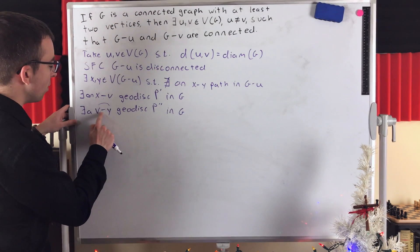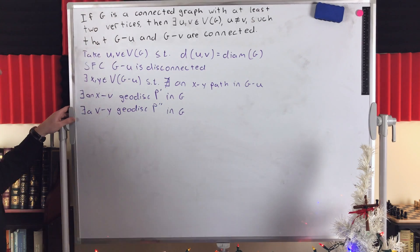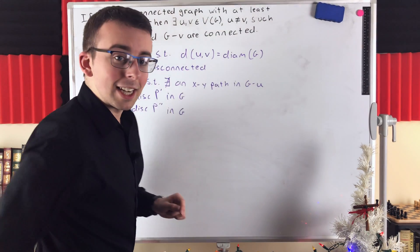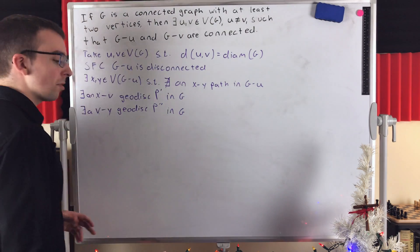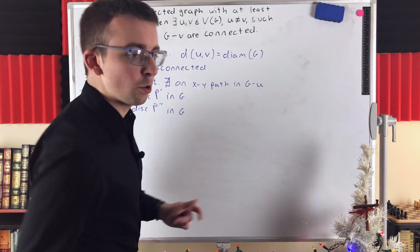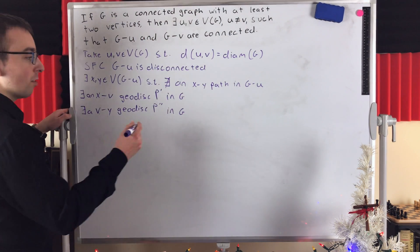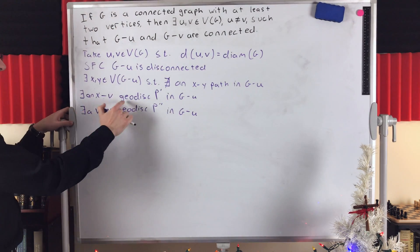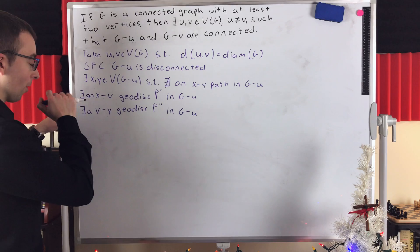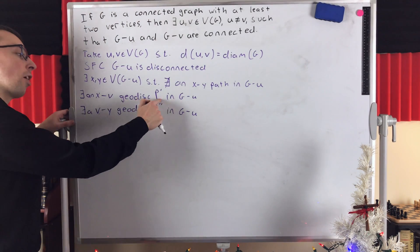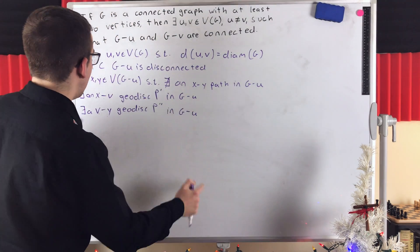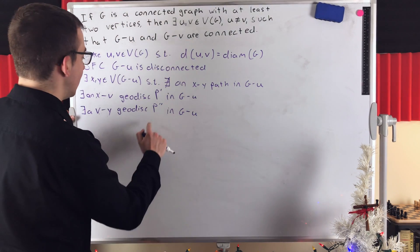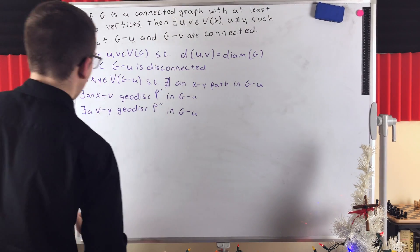So we know that U is not on either of these geodesics, which means that both geodesics exist in G minus U. Because U is not on them, subtracting U leaves them unchanged. So there exists an XV geodesic P prime in G minus U, and there exists a VY geodesic P double prime in G minus U as well.